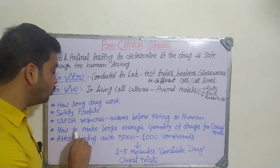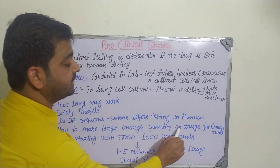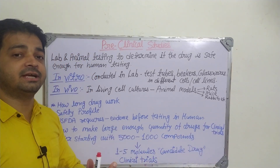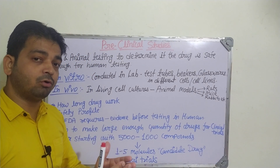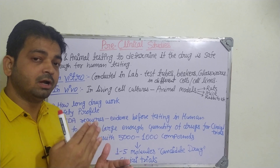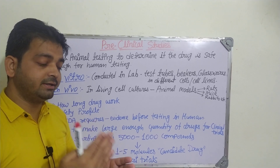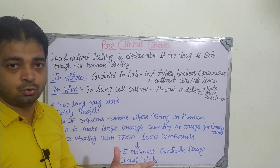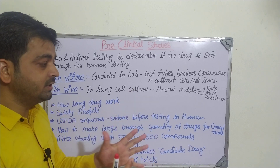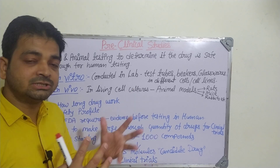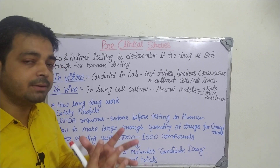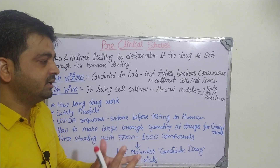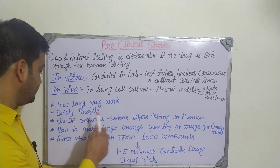Then coming to how to make a large enough quantity of the drug for clinical trials, because in clinical trials we are having human volunteers — maybe in phase one around 20 to 200, then 100 to 500, then 1000 to 5000, then in a large group. So we need a large quantity of the drug in a suitable dosage form — either tablet, capsule, or parenteral injectables.